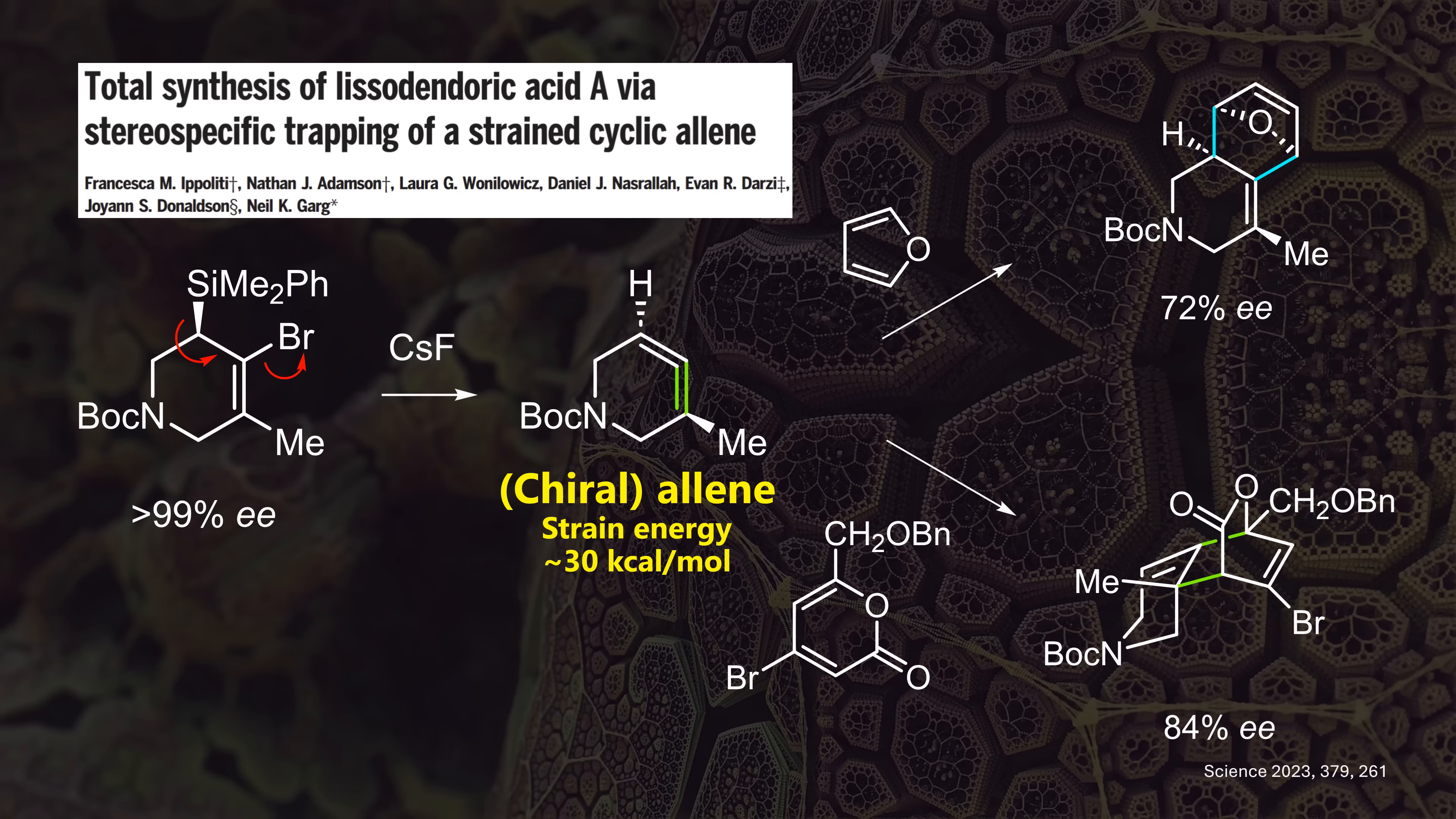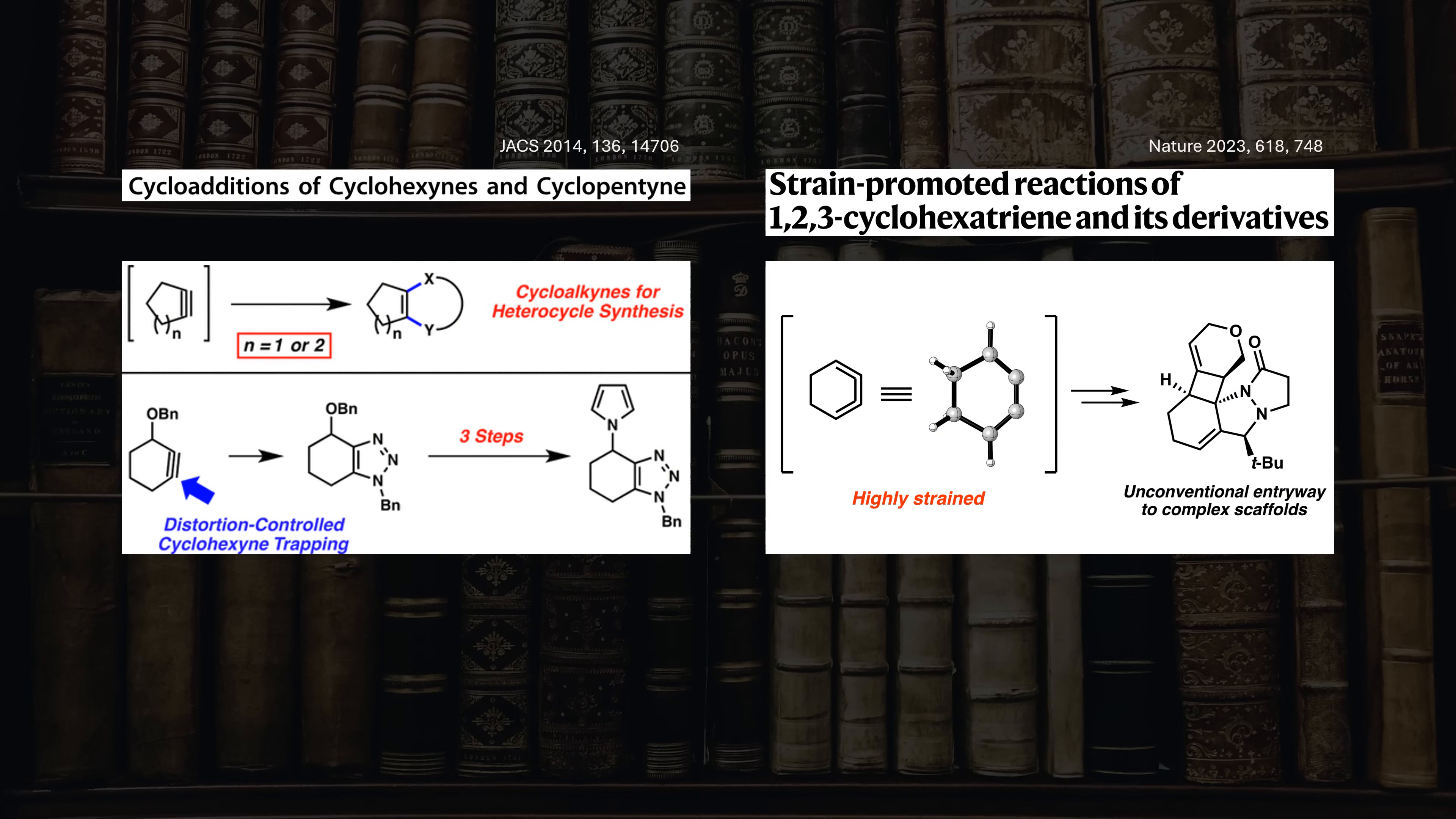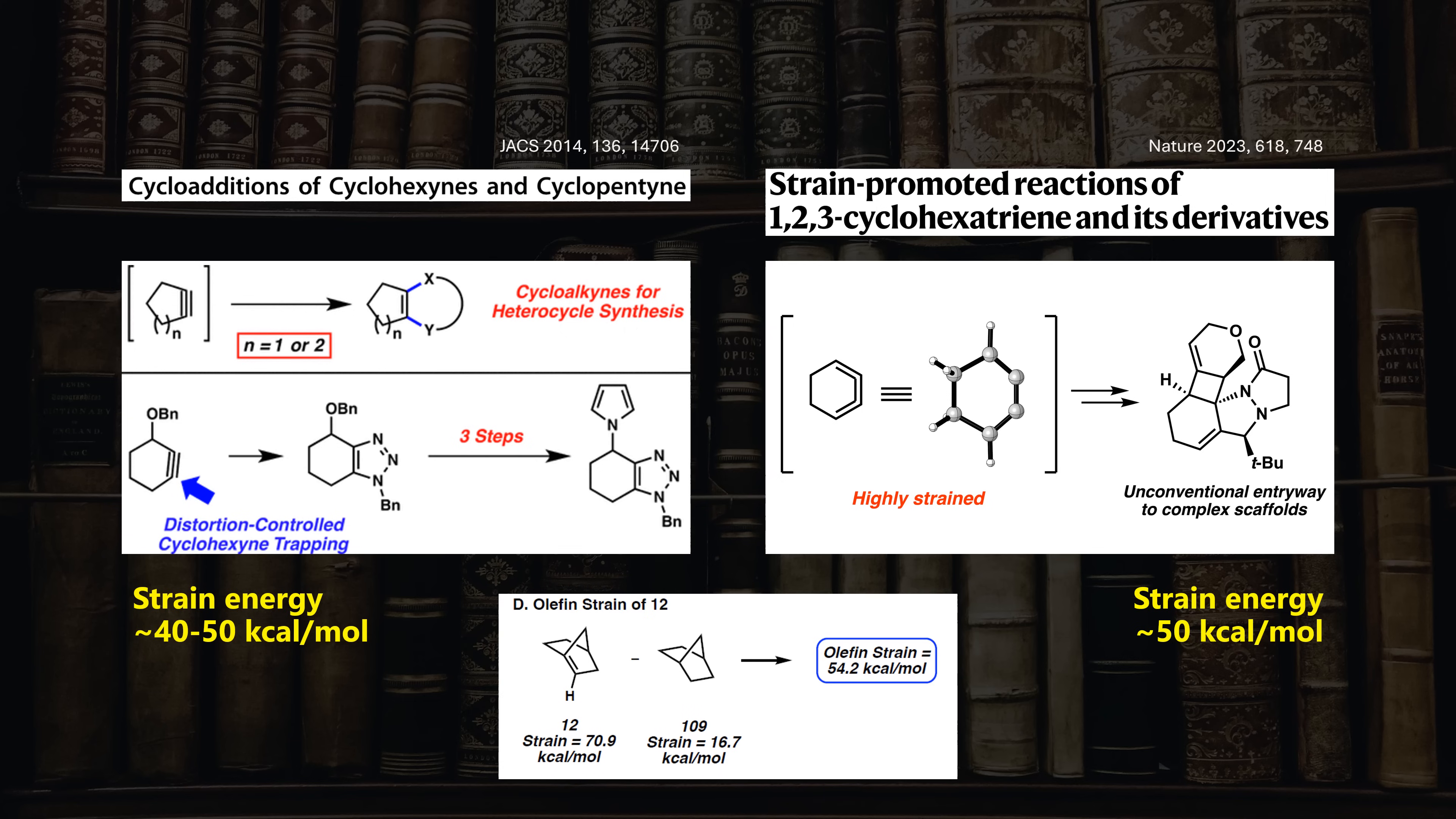They managed to stereospecifically trap it in two ways. In addition to our good old friend furan, they found that an electron-deficient diene preferentially reacted with the other double bond. Other species hunted down by this lab include benzynes and cyclotrienes, which have even higher strain energies, similar to our small anti-Bredt olefins. So it didn't seem completely impossible to tame these species as well.